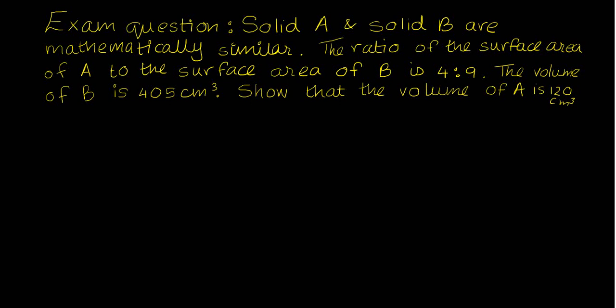Hi everyone. This video is on an exam question. The question reads: Solid A and Solid B are mathematically similar. The ratio of the surface area of A to the surface area of B is 4 to 9. The volume of B is 405 cm³. Show that the volume of A is 120 cm³.